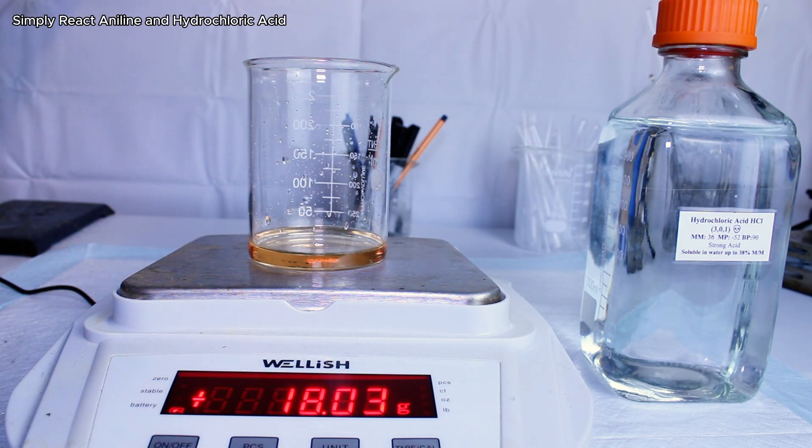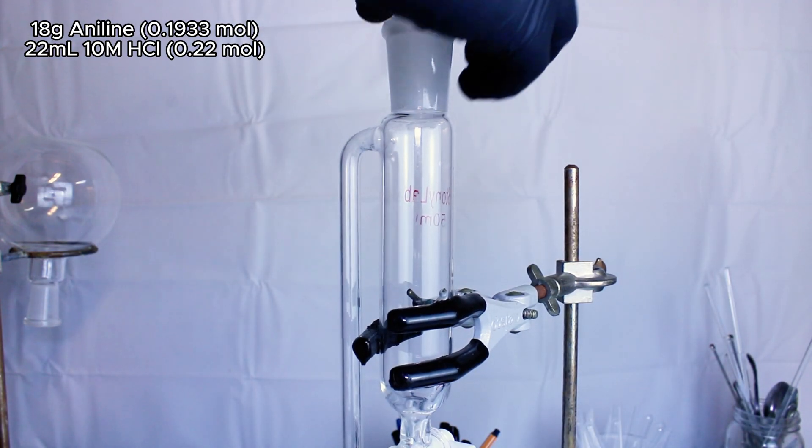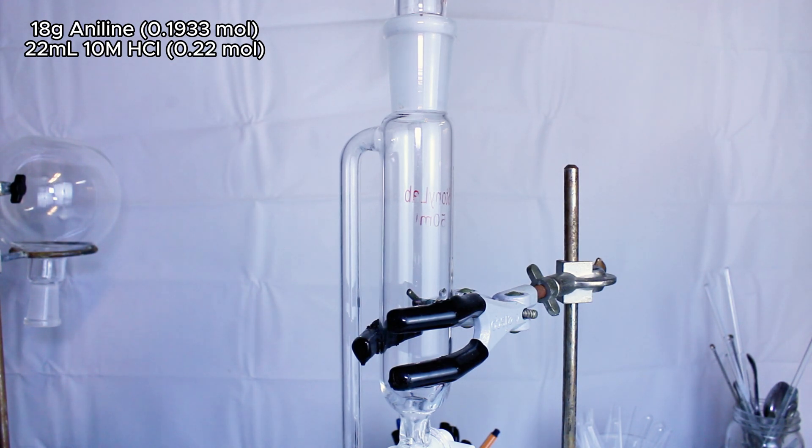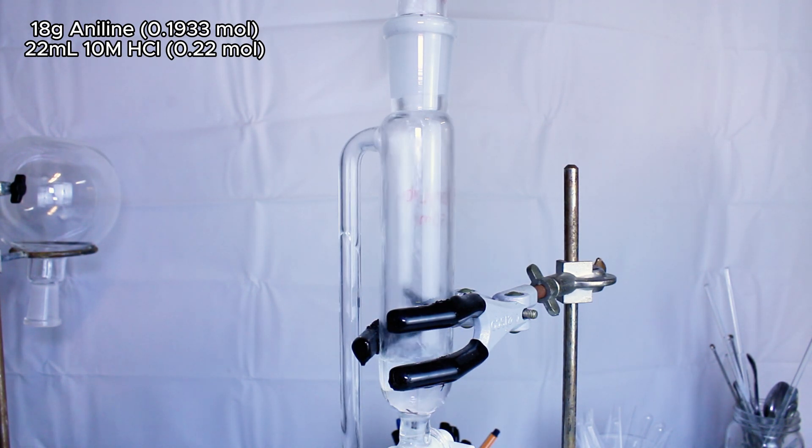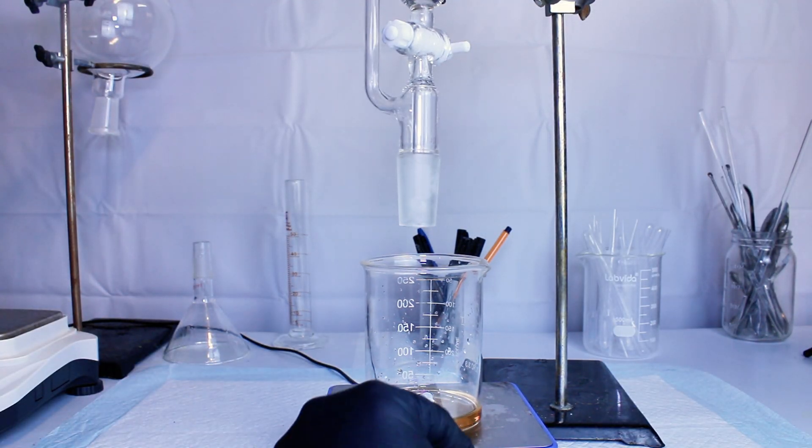To get started, I went ahead and added 18 grams of aniline to a beaker, which represents 0.1933 moles. I then added 22 milliliters of 10 molar hydrochloric acid to an addition funnel, and began to add it to the aniline very slowly and under constant stirring.